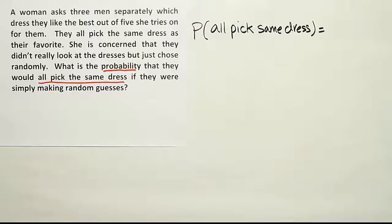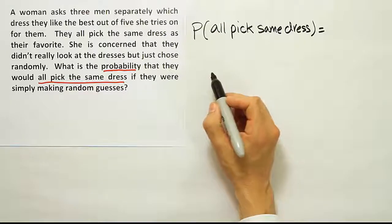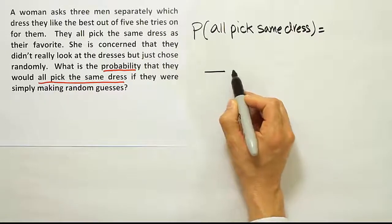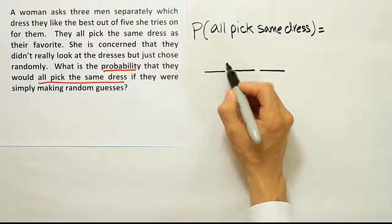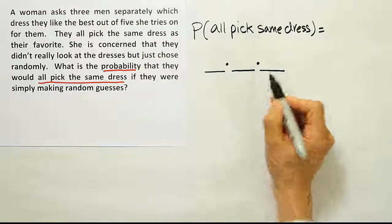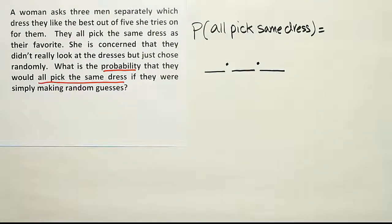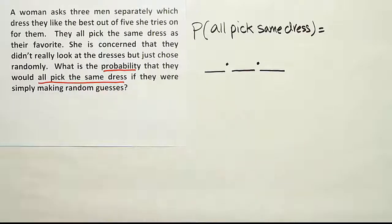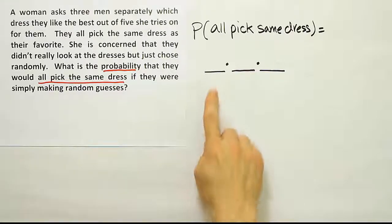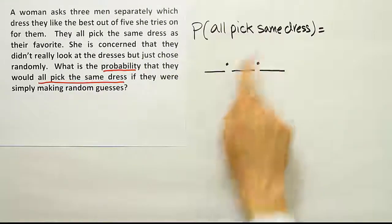But it's going to matter when we write this problem out. There are three men choosing, so I'll draw three places to represent the three events: the first man's choice, the second man's choice, and the third man's choice. When I go to talk about what that first space represents, I get stuck — because this is the probability they all pick the same dress.